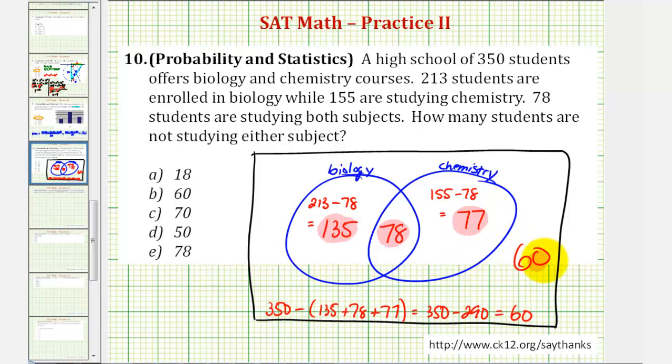So there are 60 students not studying chemistry or biology. Therefore the answer is B, 60. I hope you found this explanation helpful.